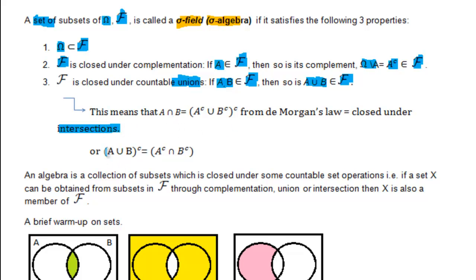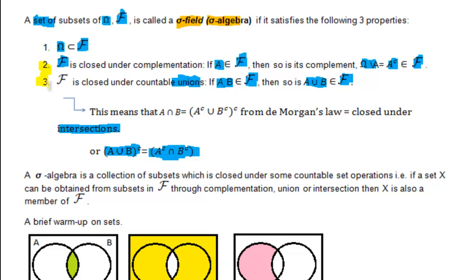This follows from De Morgan's law, where A intersection B equals the complement of (NOT A union NOT B). Therefore, we can summarize properties two and three with this statement: a sigma algebra is a collection of subsets closed under countable set operations — i.e., if a set X can be obtained from subsets in F through complementation, union, or intersection, then X is also a member of F. I wouldn't be surprised if you haven't fully understood this definition yet, but just bear with me and it will all become clearer when we do a couple of examples.